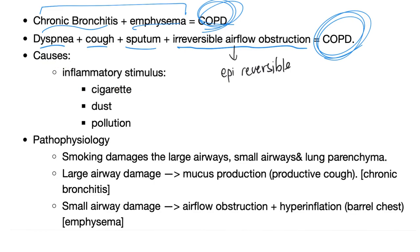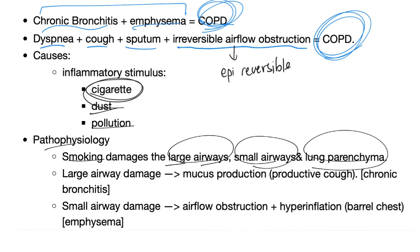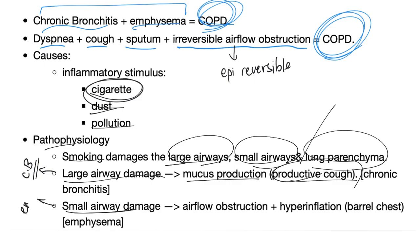Causes: inflammatory stimulus, and the most common cause is cigarette smoke — could also be related to dust, pollution, or others. Pathophysiology: smoking damages the large airways, small airways, and lung parenchyma. Large airway damage is called chronic bronchitis — the bloater — causing mucus production and productive cough. Small airway damage is emphysema.